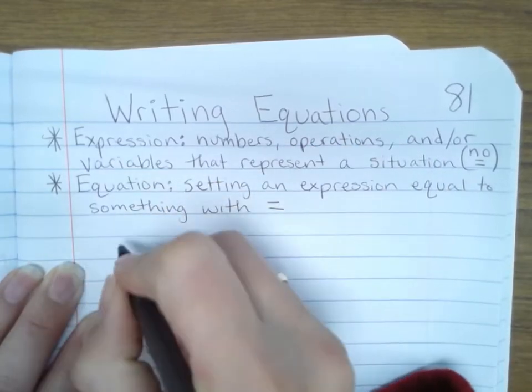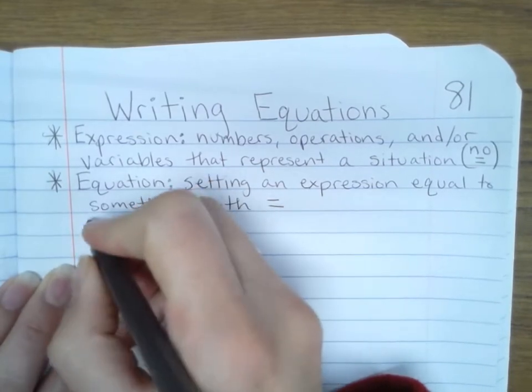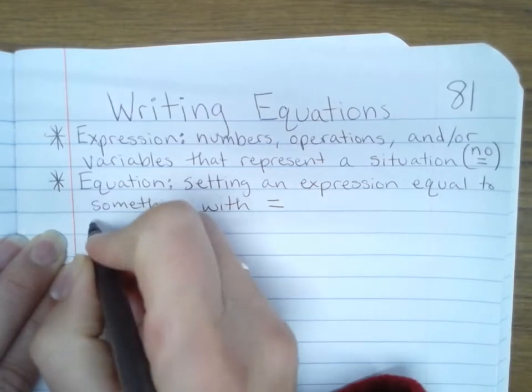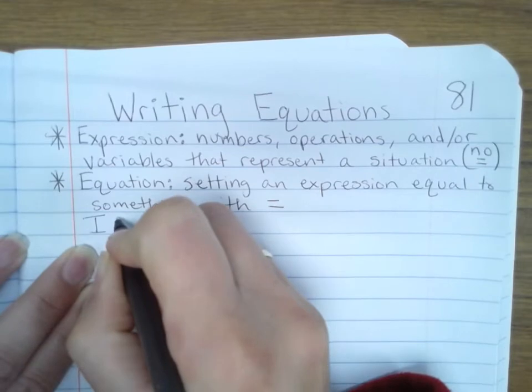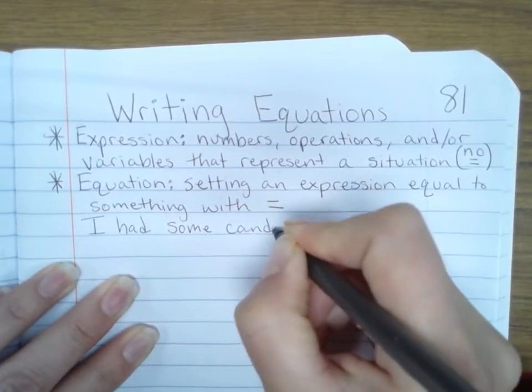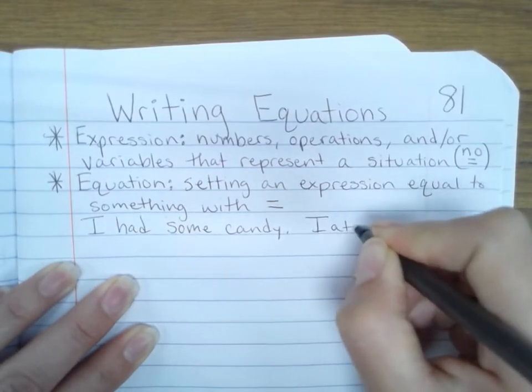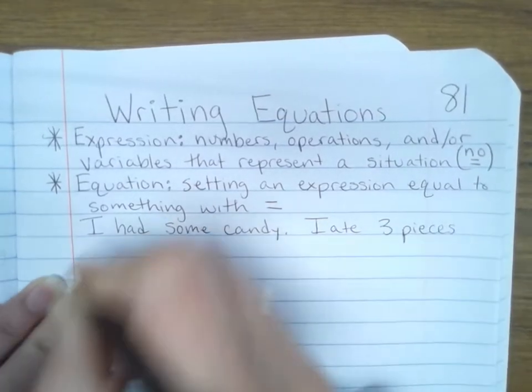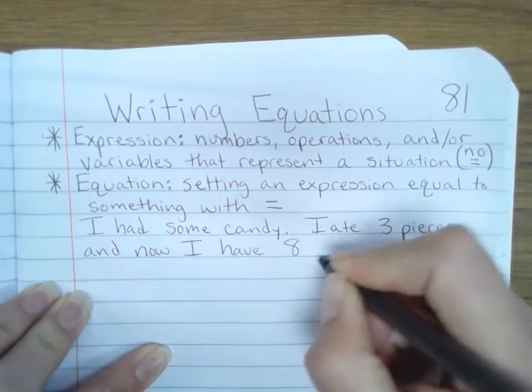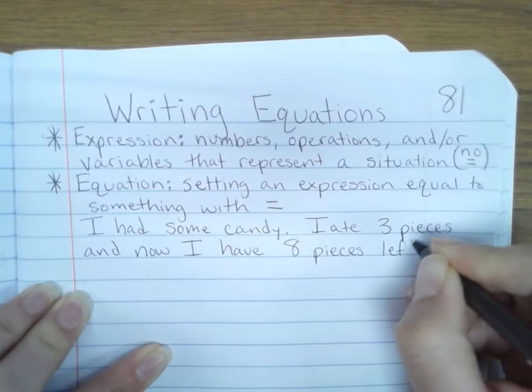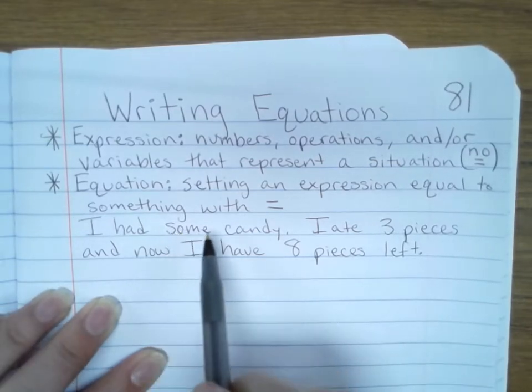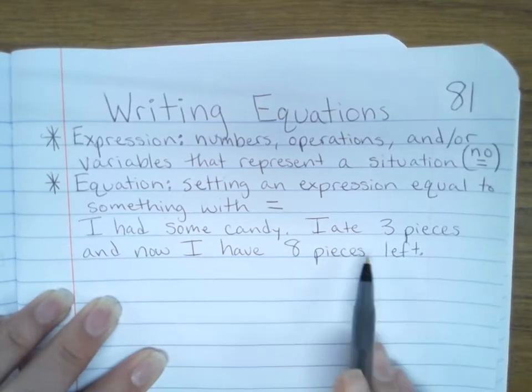So an example of an equation, let's write a couple of them. You're used to doing them all the time, but now we're just putting names to them. So for example, let's say I had some candy. I ate three pieces, and now I have eight pieces left. Okay, my expression that I'd be talking about is having some candy and eating three pieces. But now we have something that's equal to. Have is an equals word.